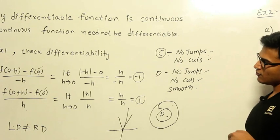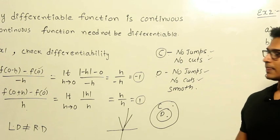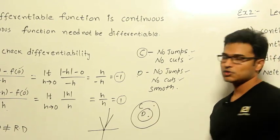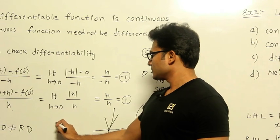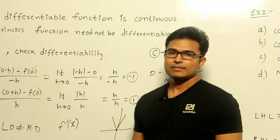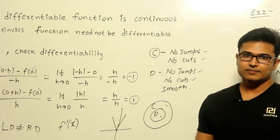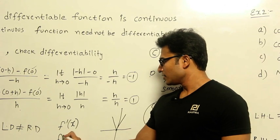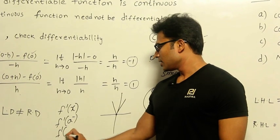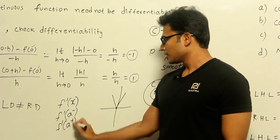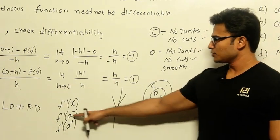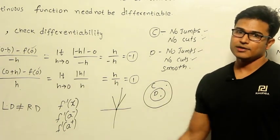Now one more thing — a shortcut you could use. But this shortcut can be applied only when a function is continuous. If you know the function is continuous, then you can use this shortcut. What is the shortcut? Find out directly f′(x). Once you find f′(x), find its value at a⁻ and a⁺. If these two are equal, the function is differentiable at point a; otherwise, it is not differentiable at that point.